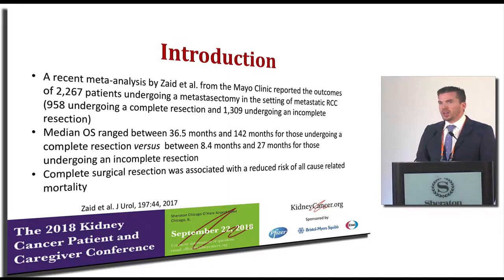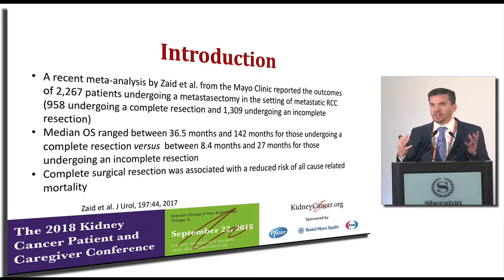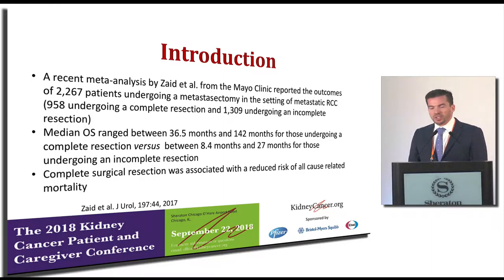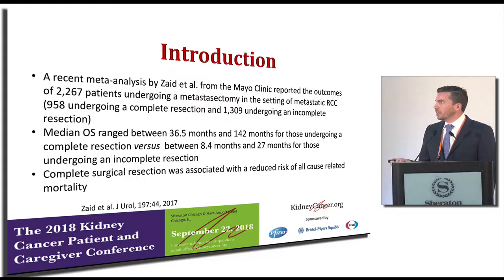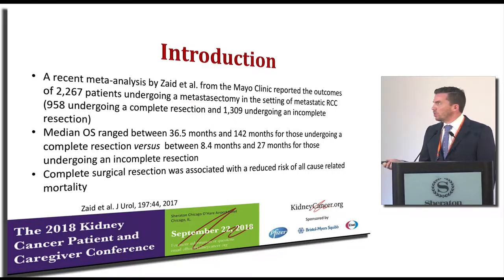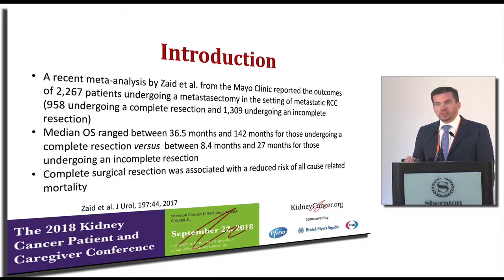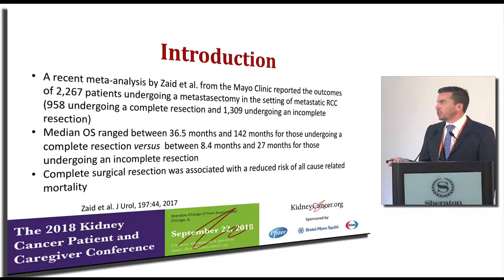A meta-analysis is when you take all the high-quality data available and look at it in detail to draw conclusions about whether something has a benefit. This study was published from the Mayo Clinic group. They looked at over 2,267 patients who underwent metastasectomy and tried to identify whether complete removal versus incomplete removal makes a difference. Intuitively that makes sense — if you remove all of it, you'd think you'd do better. And they came to that conclusion: fairly significant overall survival differences between complete versus incomplete resection — 36.5 months versus 8.4 months.